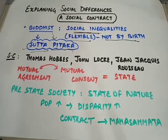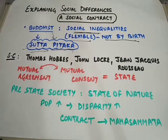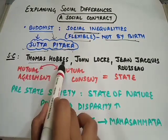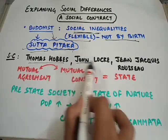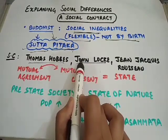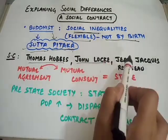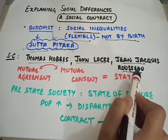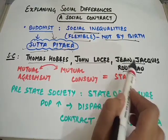The social contract theory was given by three famous scholars. First was Thomas Hobbes, then John Locke — both of them were from England — and then John Jacques Rousseau, who was from France.